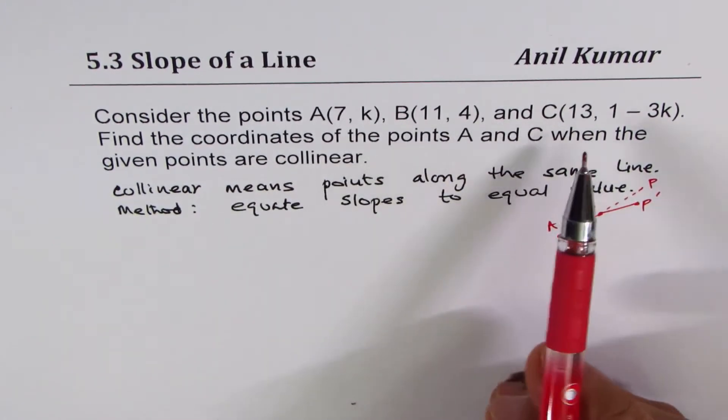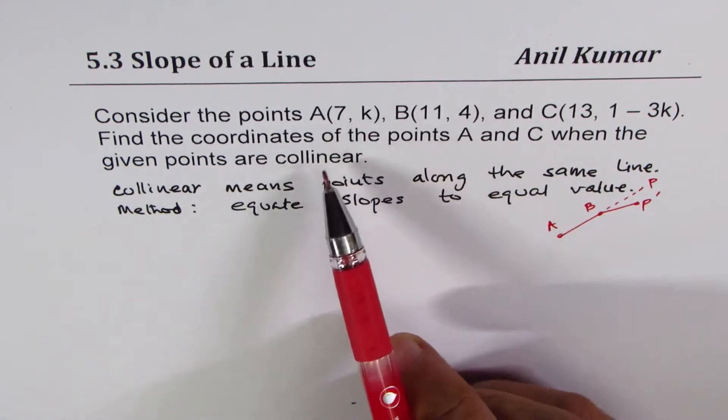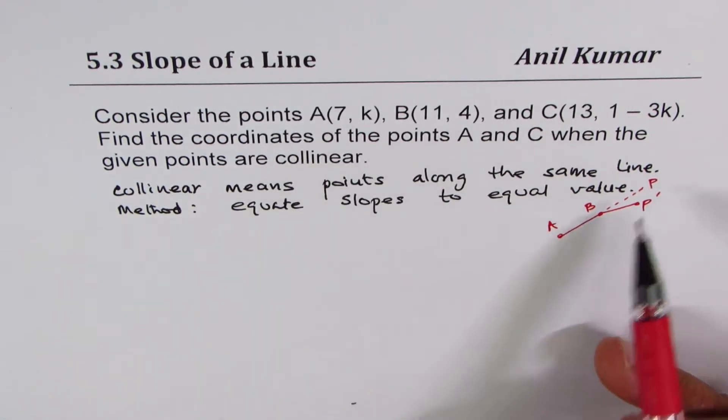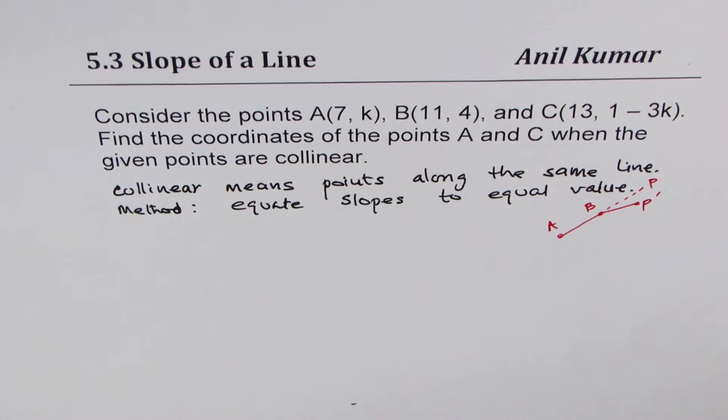So at times, you may be asked a question to find value of K so that the point is not collinear. In that case, don't use the value which we get here.